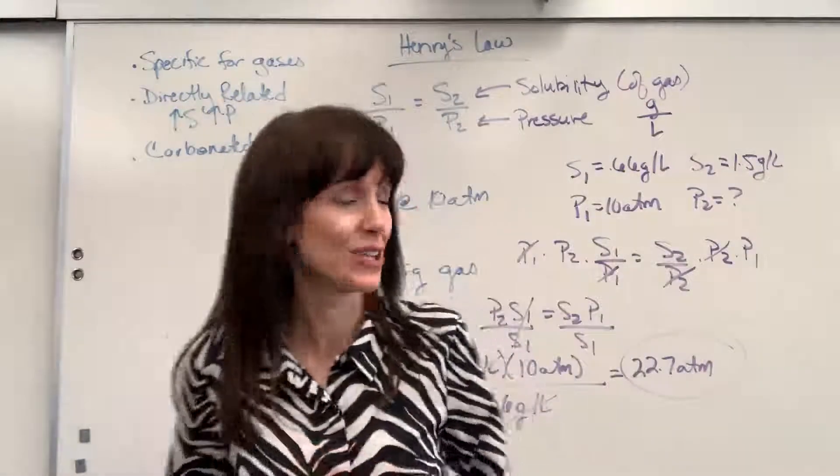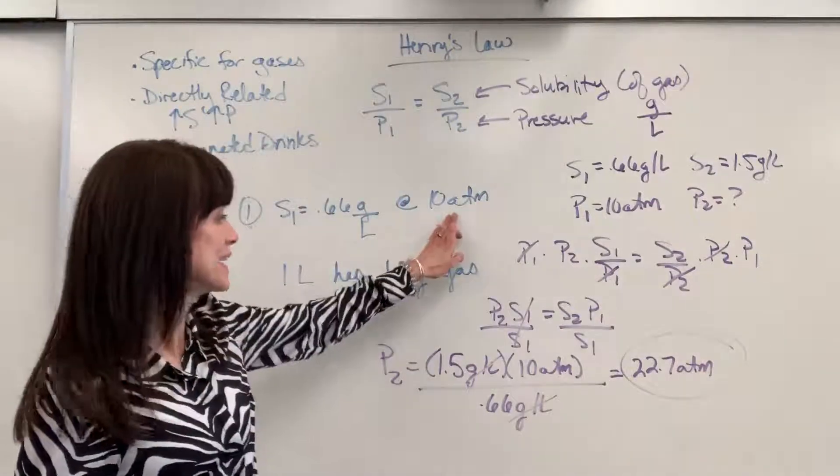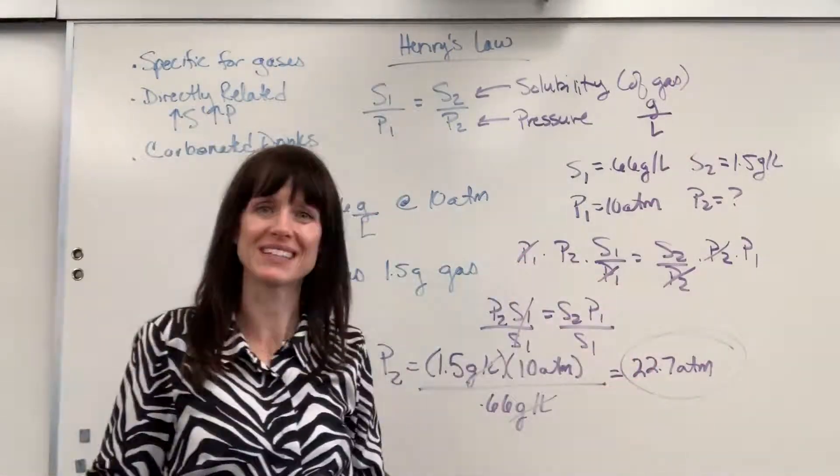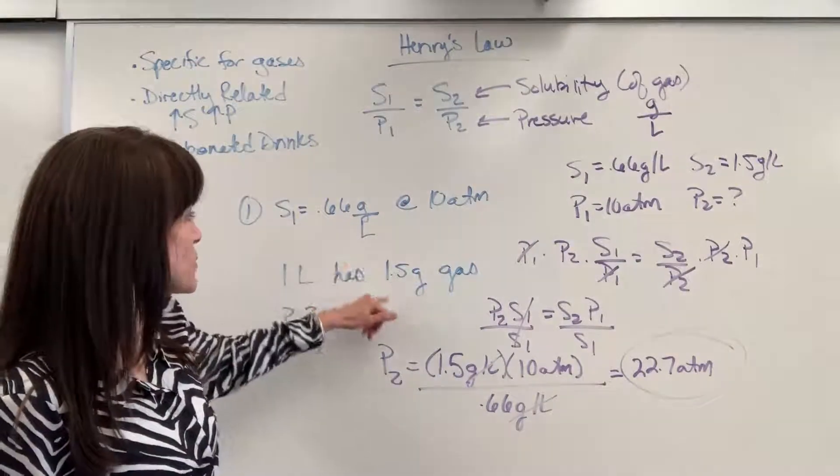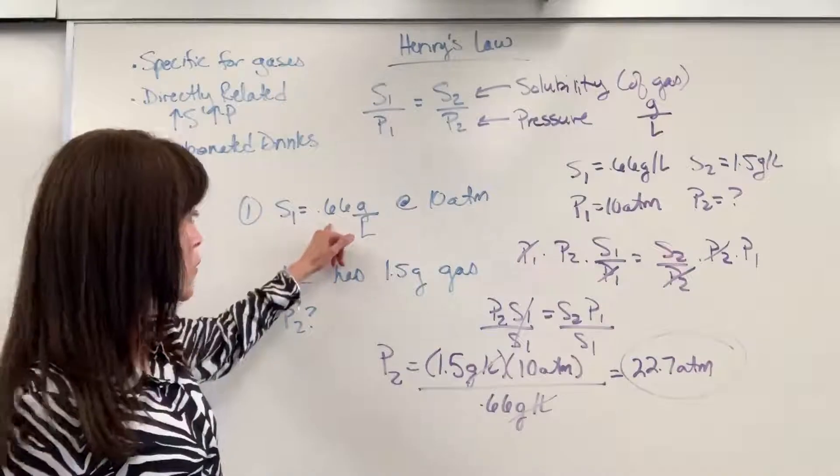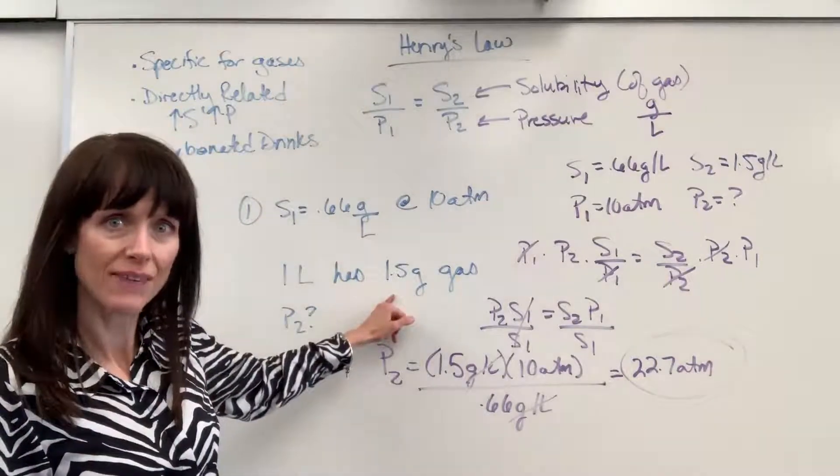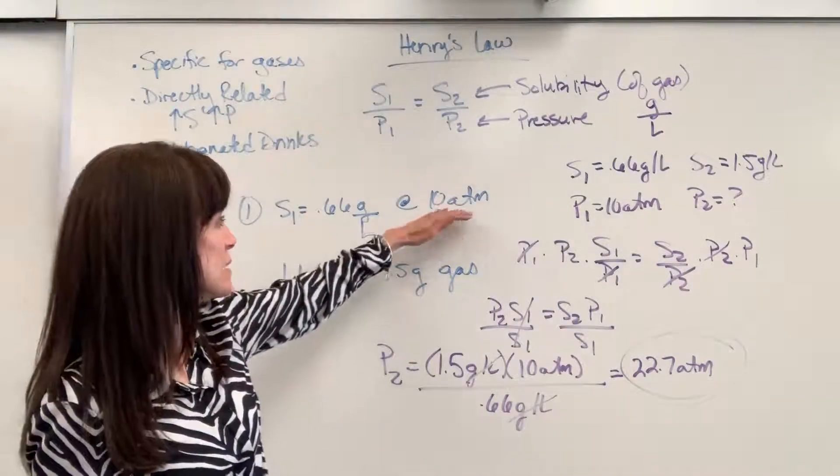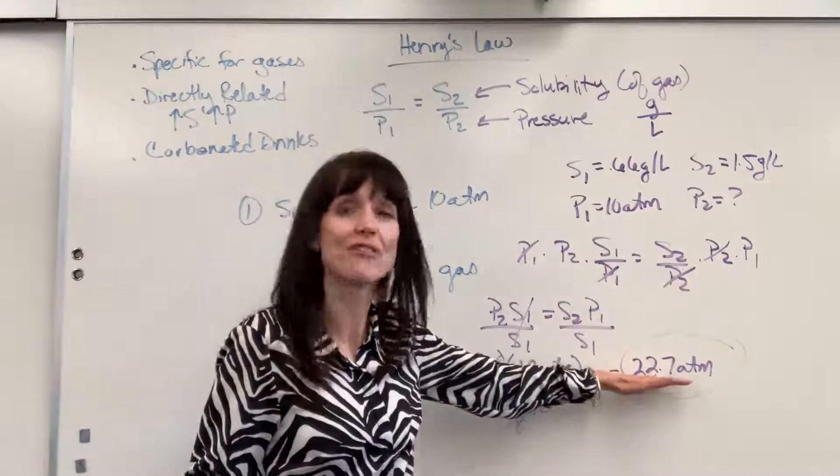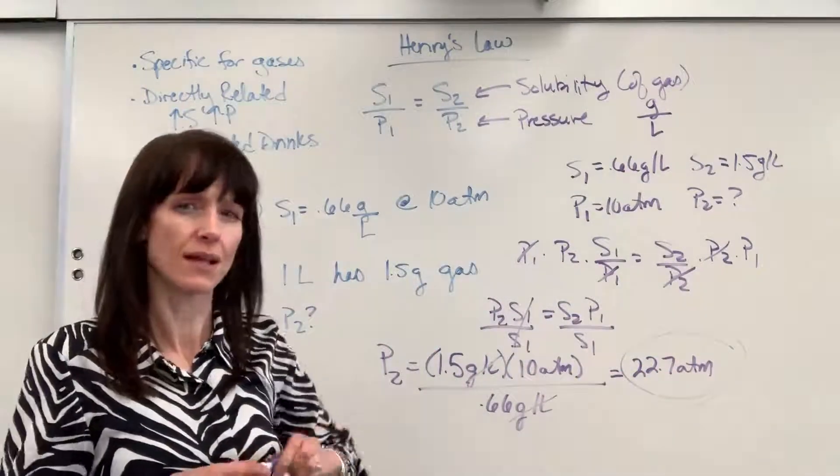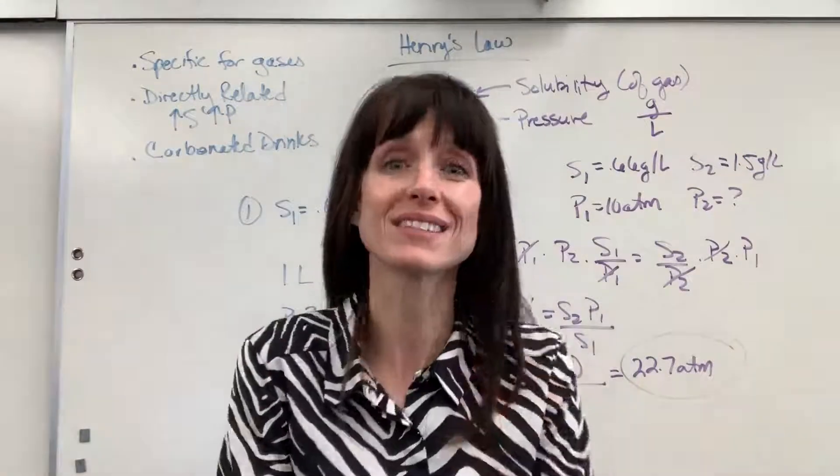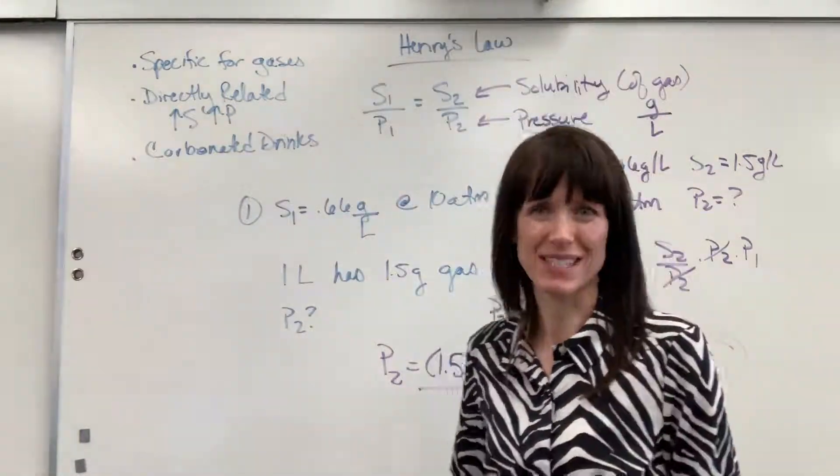Did it increase? You bet it did. We went from 10 atm to 22.7 atm. And notice if we increase 0.66 to 1.5, that's over twice the amount of gas dissolved. Look at this. We need over twice the amount of pressure because it's directly related. It's amazing how math works out that way. Pretty cool. One of the things I love about chemistry is predictable.